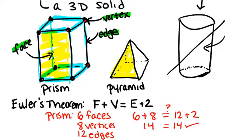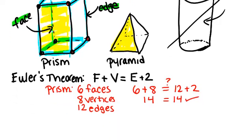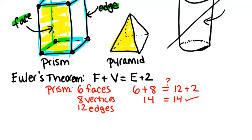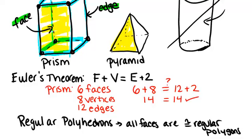And it will actually always hold for any polyhedron. Now, there are special types of polyhedrons called regular polyhedrons. And they are when all of the polygon faces are regular polygons. In fact, the faces aren't just polygons, they're all congruent polygons.